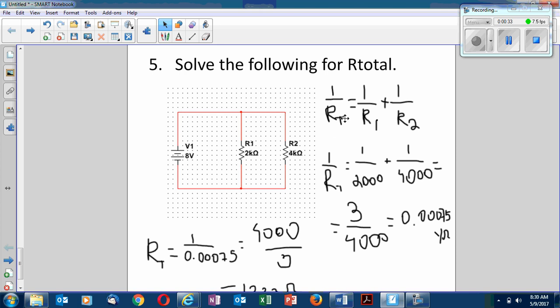So when I plug into the formula, I have to convert my kilo ohms into ohms. So it's 1 over 1000 plus 1 over 2000 plus 1 over 4000. If you use the common denominator, it comes out to 3 over 4000, or 0.0075, 1 over ohms.